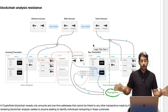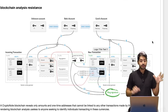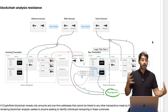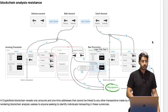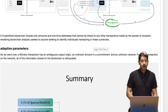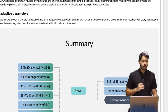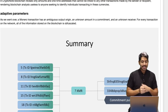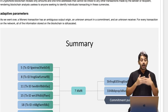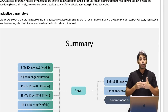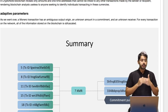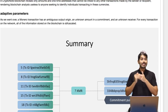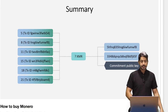This has been a high-level overview of everything. Those four components — ring signatures, Ring CT, stealth addresses, and Kovri — are really the key features of Monero. For every transaction on the network, all information stored on the blockchain is obfuscated: an ambiguous output origin, an unknown amount in a commitment, and an unknown receiver.